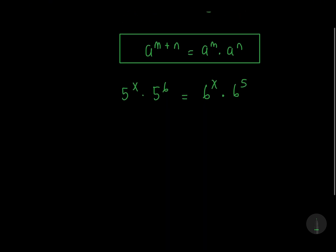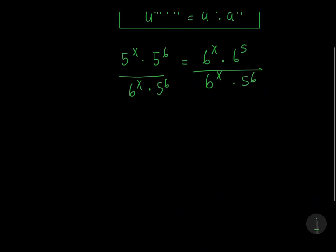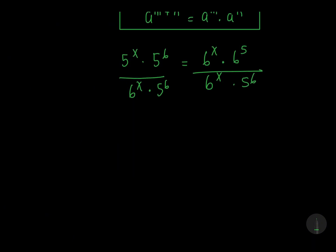So from here, we have to divide both sides by 6 to the power x, and then we have to divide by 5 to the power 6. So this will cancel and this will cancel.